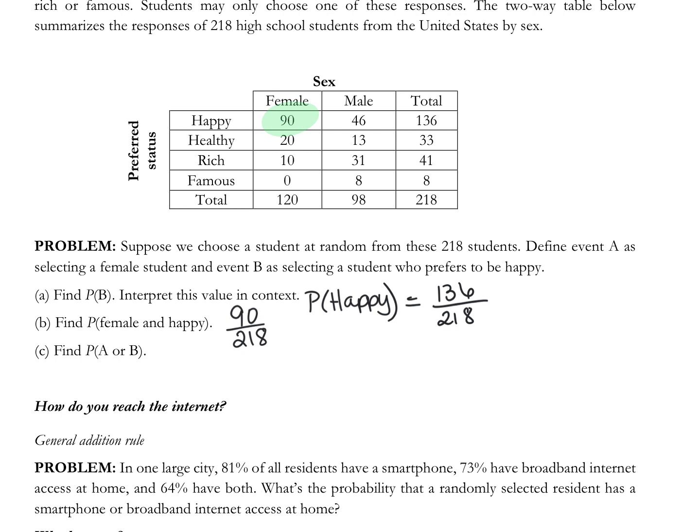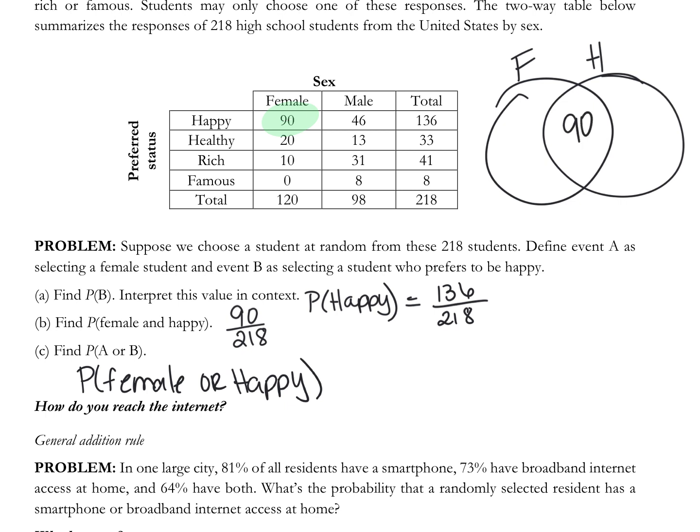So what would that be? Female or happy. Now could we draw a Venn diagram for this? Do we want to do that? So female, happy. How many go in both? 90 students said both, right?